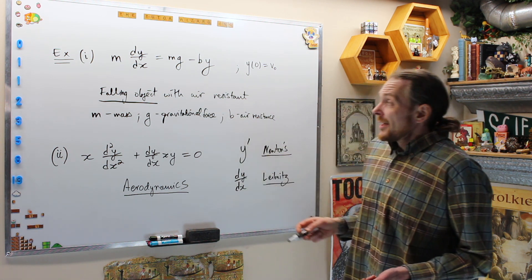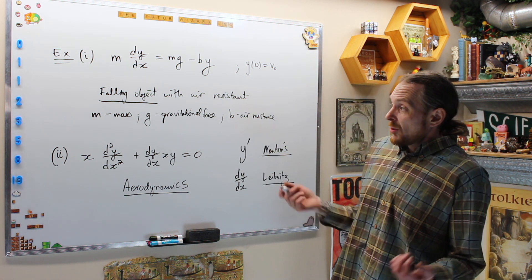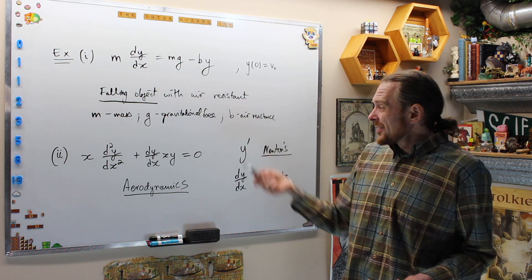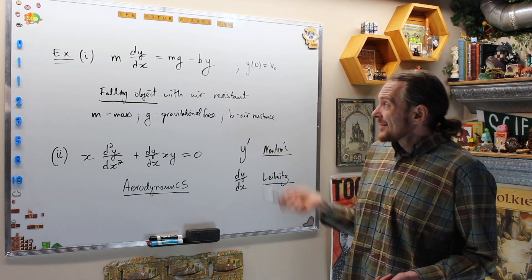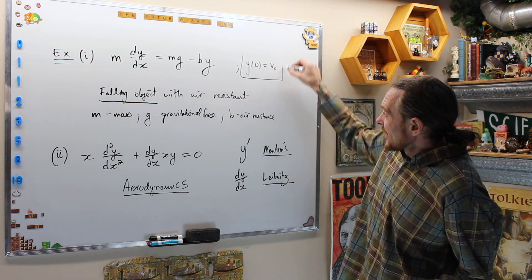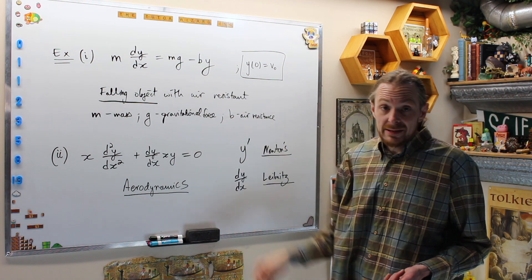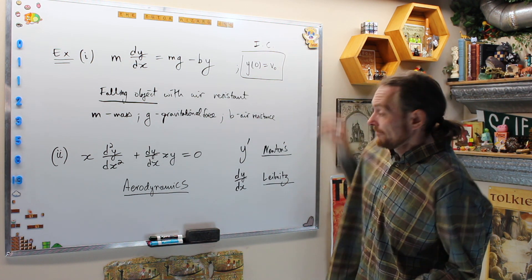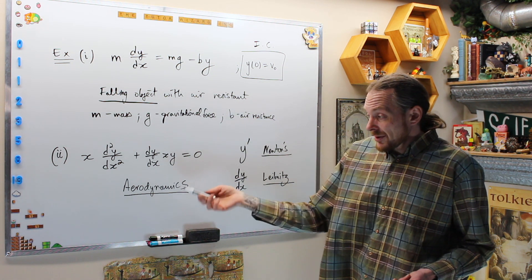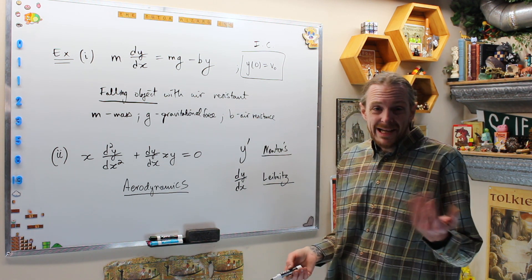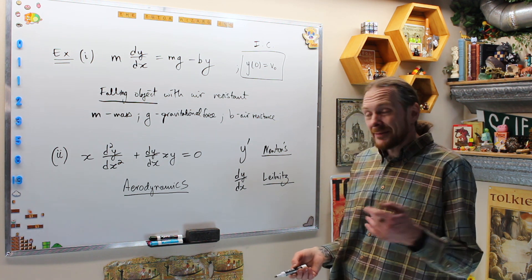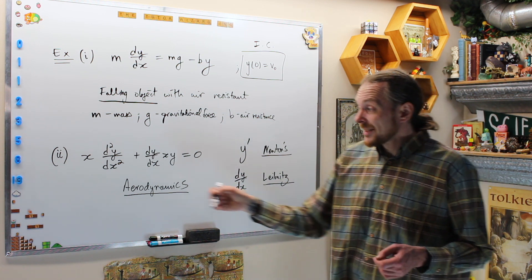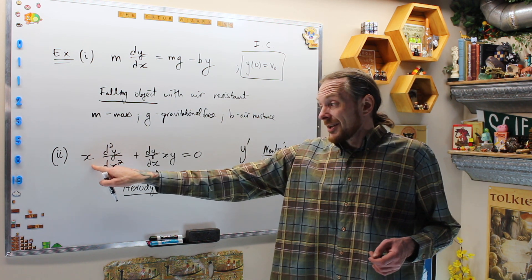The first example is the equation of a falling object with mass M, the gravitational force near Earth, and B as the air resistance. We're going to talk about the difference between these two and what this is—this is called an initial condition. The second equation is a differential equation involved in aerodynamics. We'll derive these eventually once we know how to solve some of these.